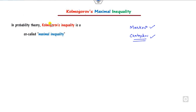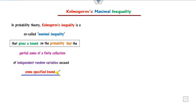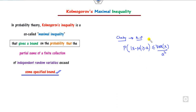In probability theory, the Kolmogorov maximal inequality is also called the Kolmogorov inequality or simply the maximal inequality. It basically provides bounds on the probability that the partial sum of independent random variables exceeds some specific bound. This is the first basic difference: Chebyshev inequality works on random variables — P(|X - μ| ≥ k) ≤ Var(X)/k² — but the Kolmogorov maximal inequality works on the partial sum of random variables.